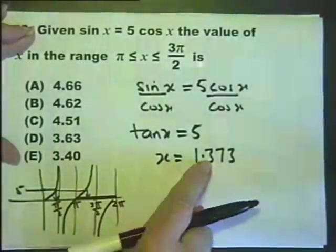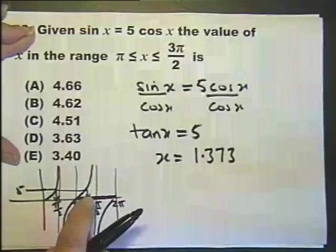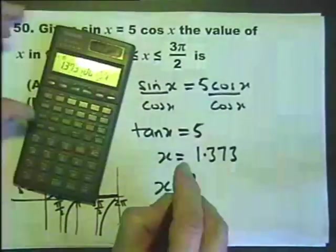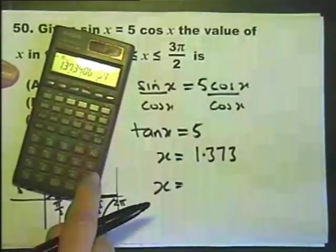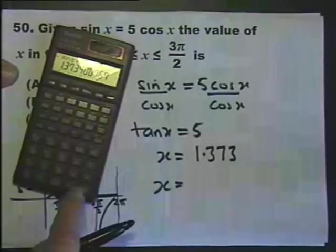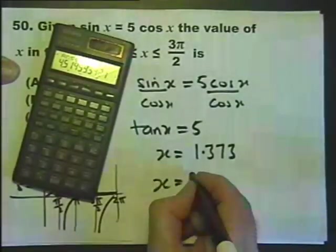So if I add that value onto pi, let's see what happens. So I've still got it in the calculator actually. So if I do answer plus pi, I get this answer now.